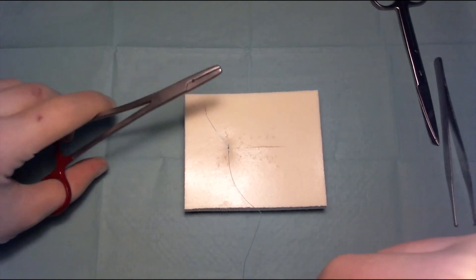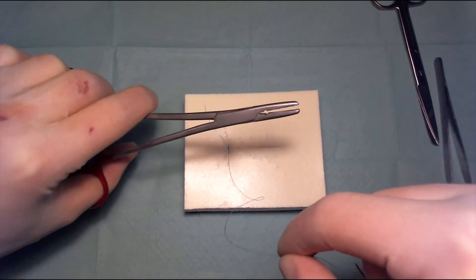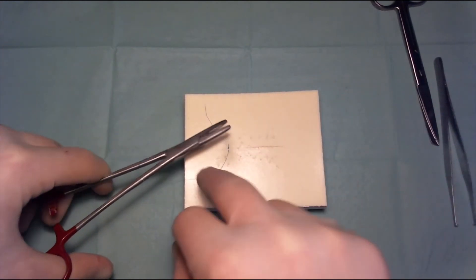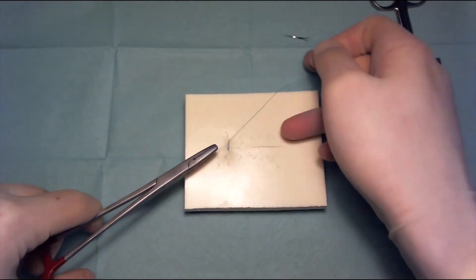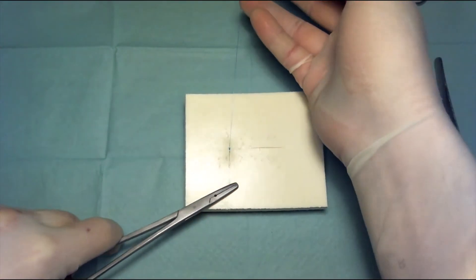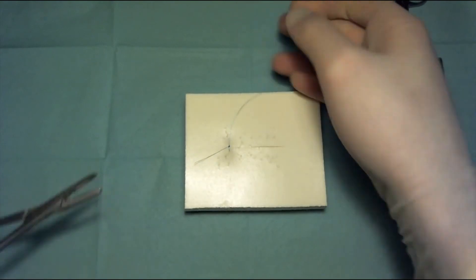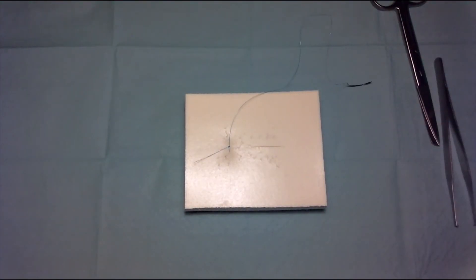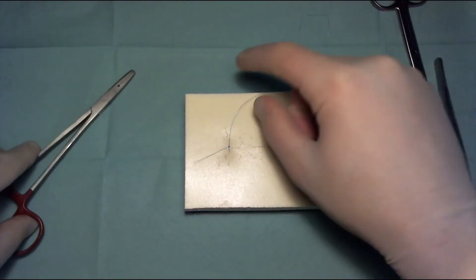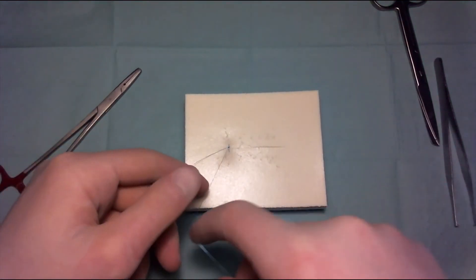So for our final throw away from us, one time, grasp the short leg, pull it through, and switch sides again, like this. So this is our simple interrupted suture.